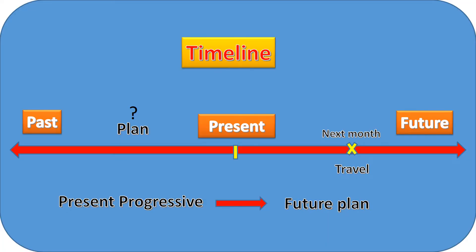Let's have a look at this timeline. We have the present, past and future. The verb is traveling is in the present progressive, but it expresses a future plan, which means that the action of traveling is going to occur in the future, precisely next month. The action has been planned or decided sometime in the past. To sum up, we use present progressive to express future plans and arrangements.